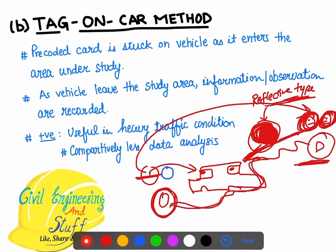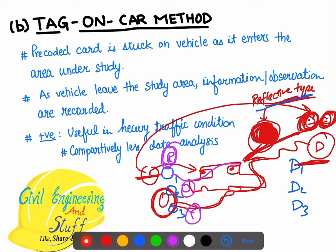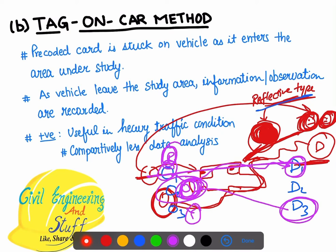In case there are multiple origin and destination points, different colour-coded reflective tags can be used — for example, red, orange, or yellow type tags. If a yellow-tagged car goes from origin to a destination, they get to know the origin and destination point. Likewise, if an orange tag goes to, say, D3, they know the origin was O2 and destination is D3.